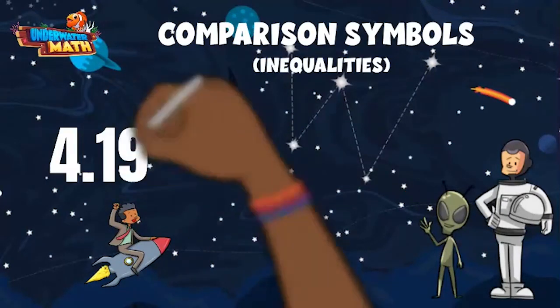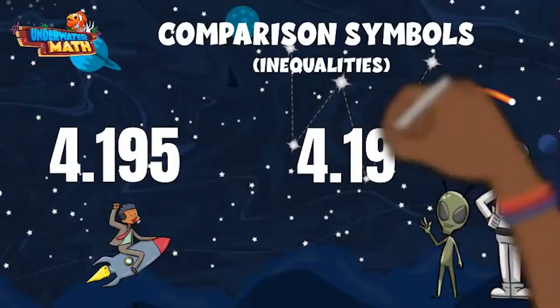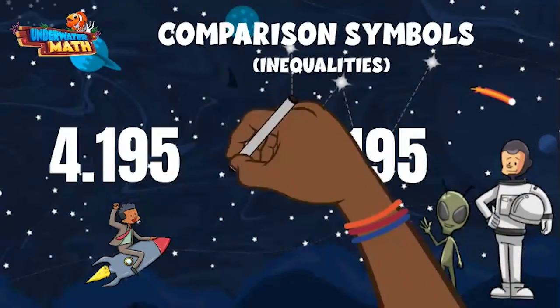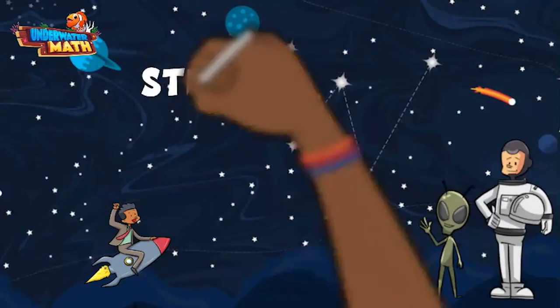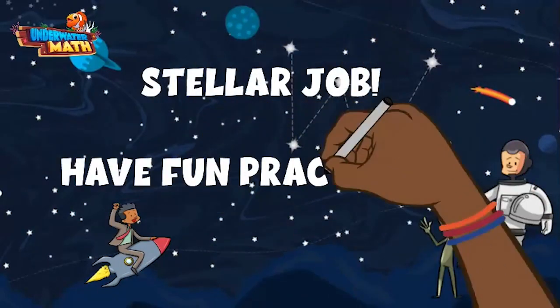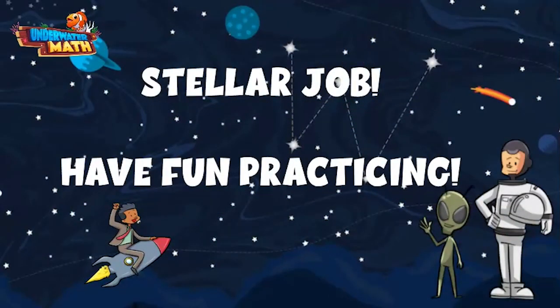And remember, if two numbers are exactly the same like these two numbers here, you use the equal to symbol between them. This shows they are the same. Stellar job Space Kids, have fun practicing.